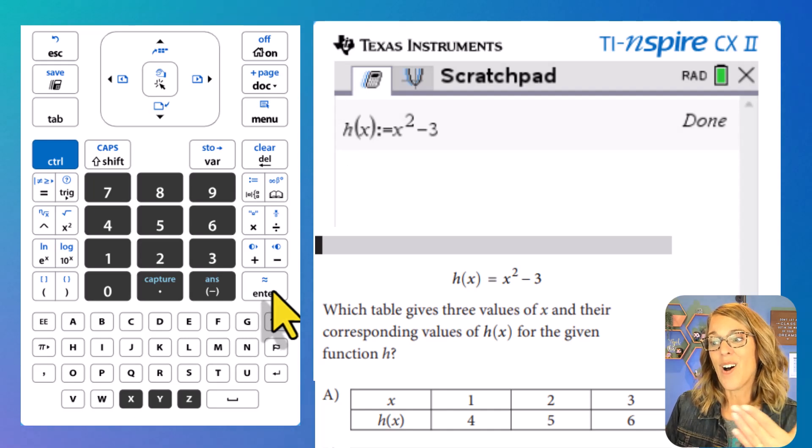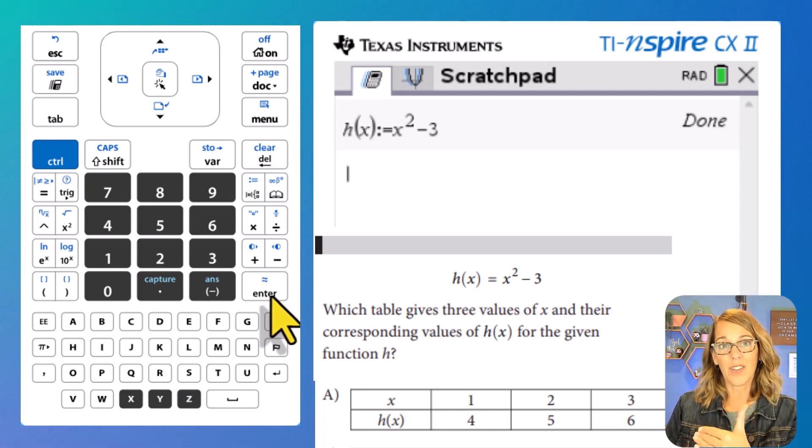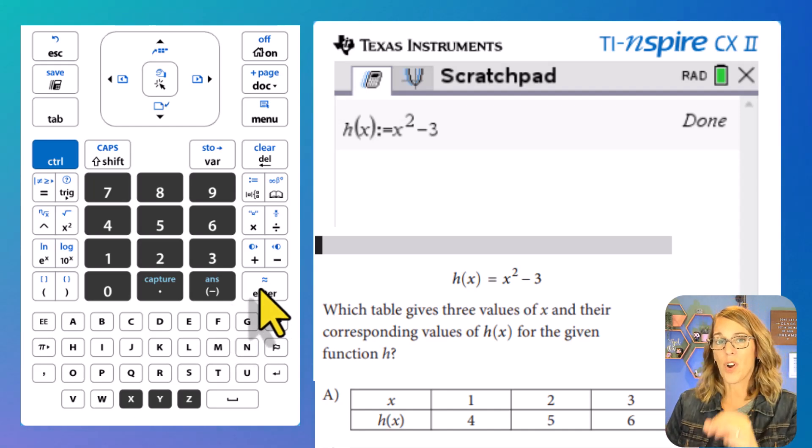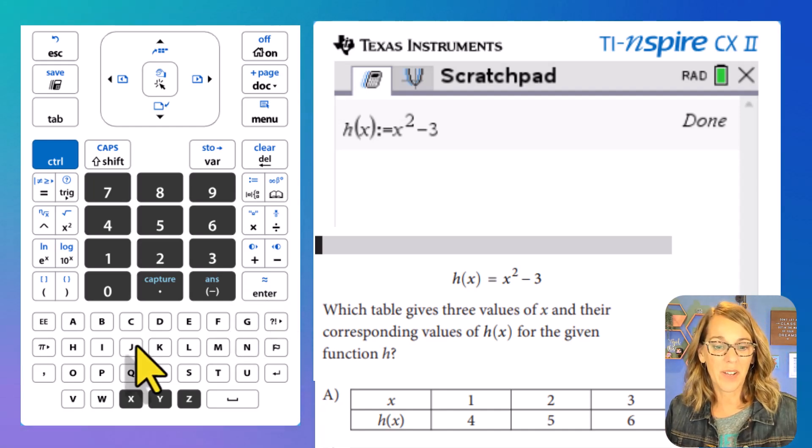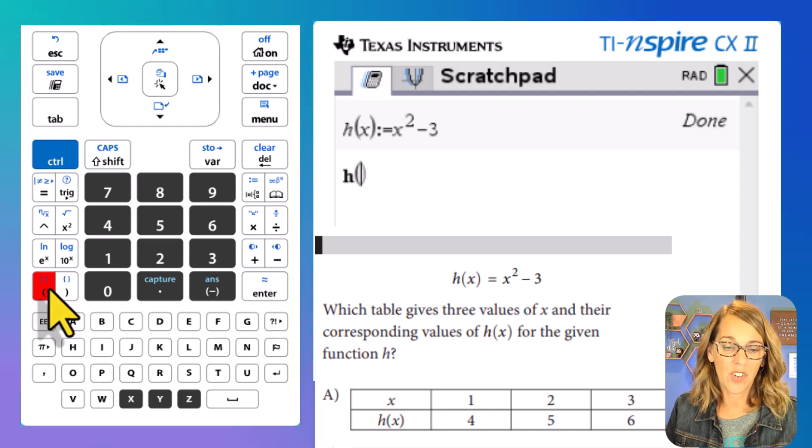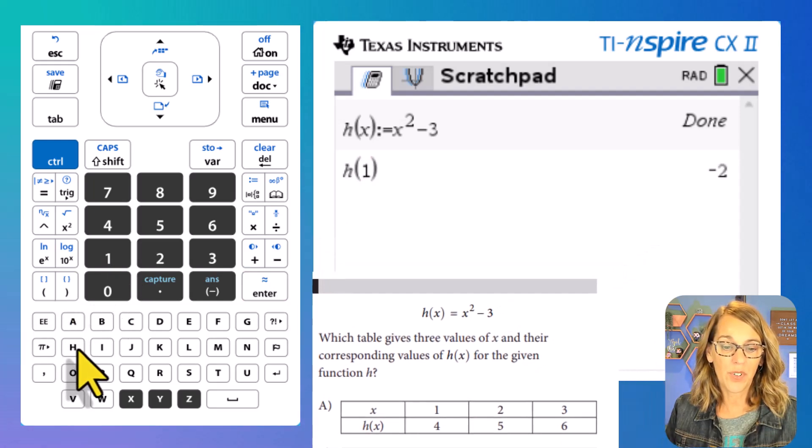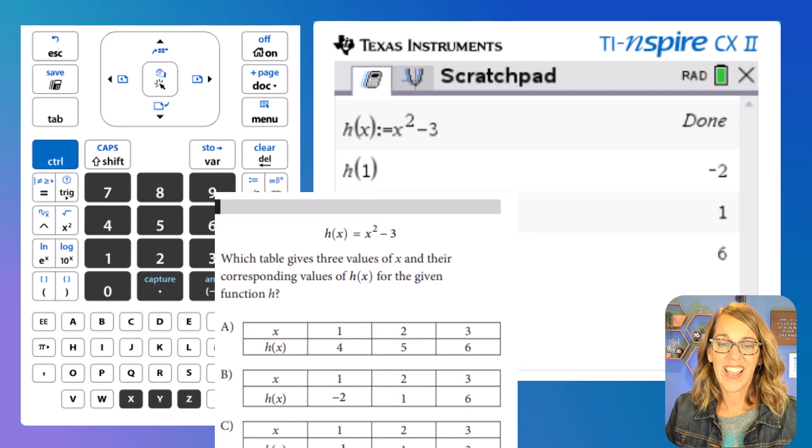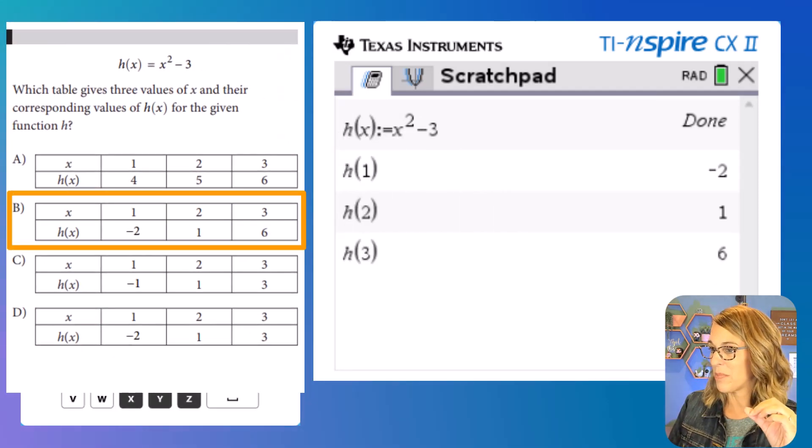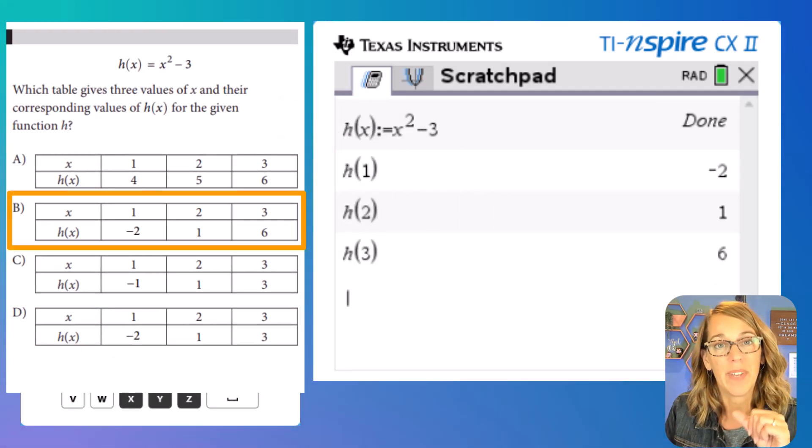So now it's been assigned. All I've got to do is to evaluate it for each of the X values in my answers, which are a 1, a 2, and a 3. So here we go. We're going to go H parentheses 1 enter. And then we'll do H parentheses 2, enter. And then finally, we've got H parentheses 3, enter. And negative 2, 1, 6 is what I'm looking for. And that answer is going to be B.